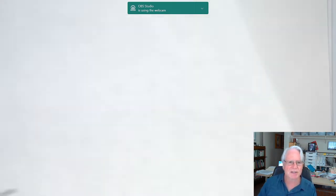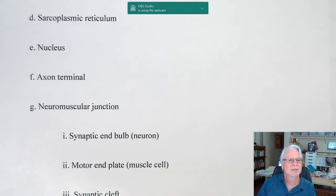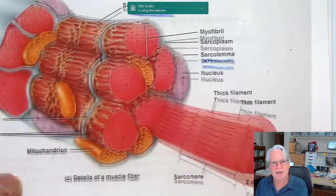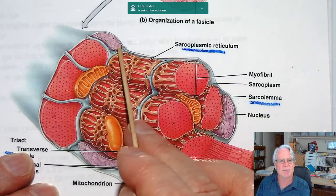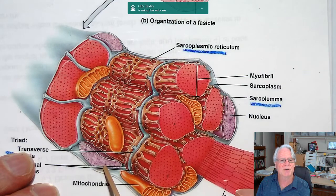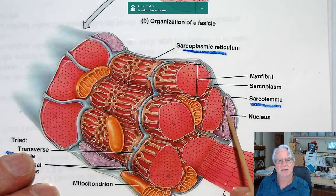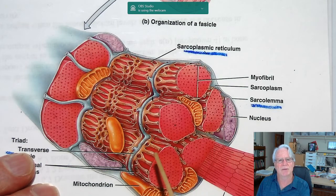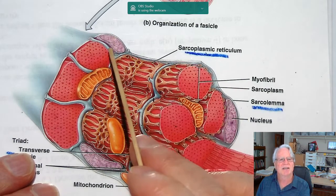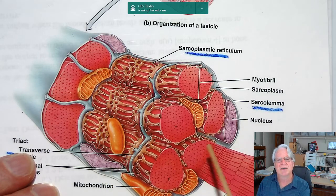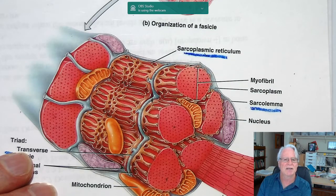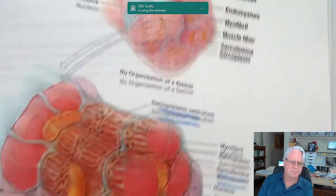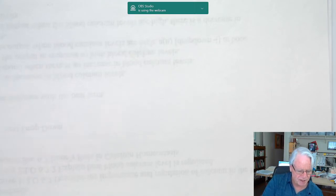The next structure is the nucleus. As you can see in this drawing, there are many nuclei, and they're located on the outside — the periphery of the cell. Many nuclei inside a single skeletal muscle cell.